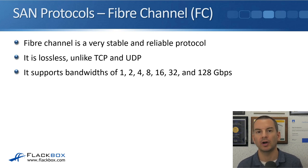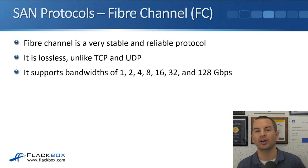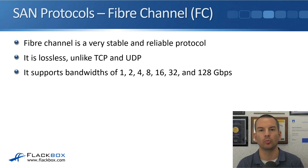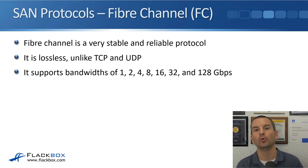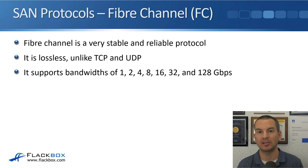Fibre Channel is more stable and more reliable than Ethernet networks in general. It supports bandwidths of 1, 2, 4, 8, 16, 32, and 128 gigabits per second. When it first came out, it was 1 gigabit per second, and then as time went on, 2 became available, then 4, then 8, and so on. If you've got a Fibre Channel network, it's not necessarily going to support all of these different speeds. This is the latest that's available now, but to have all those different speeds available on your network, you would need to be running the latest hardware.